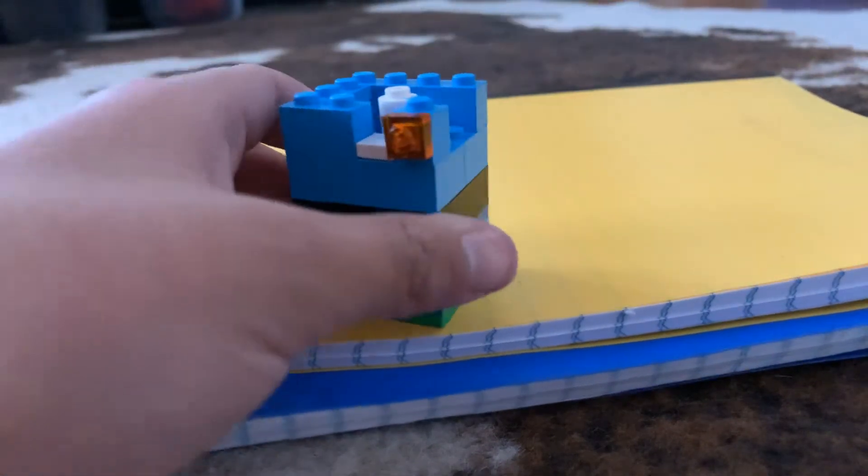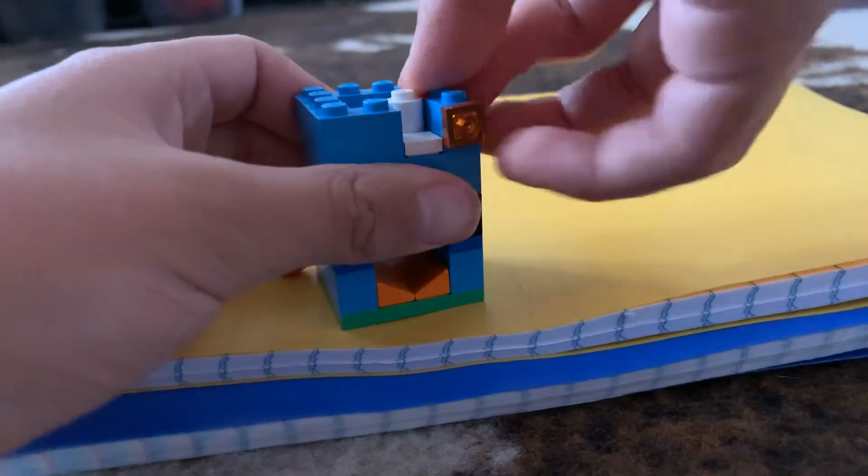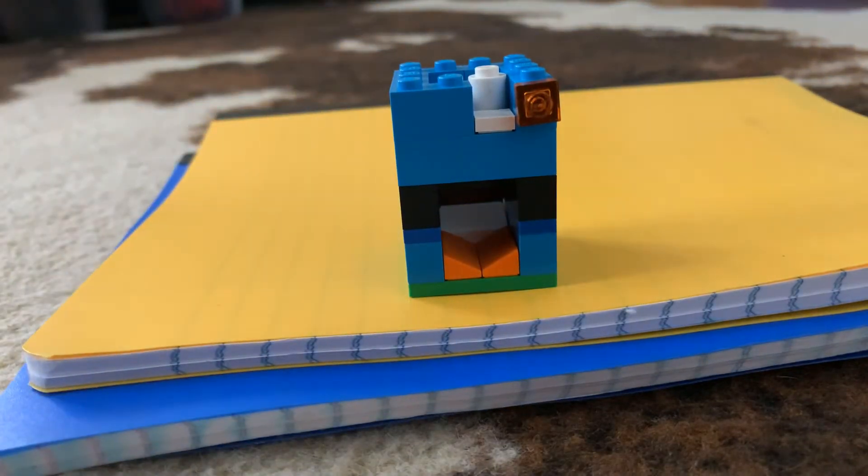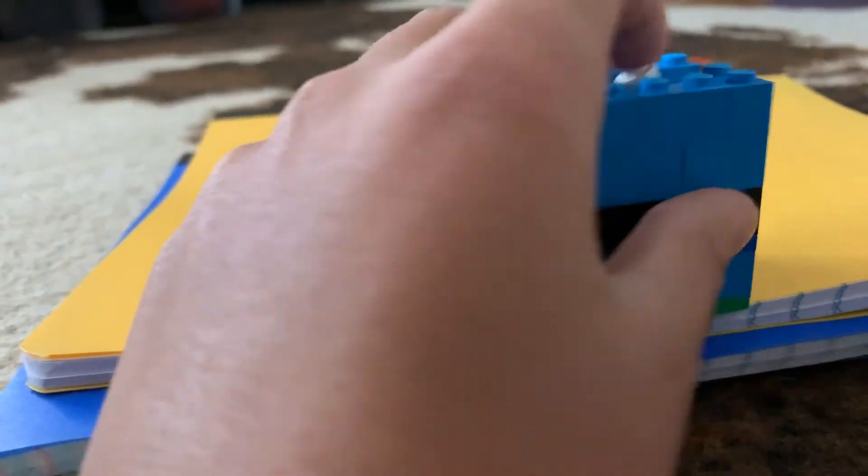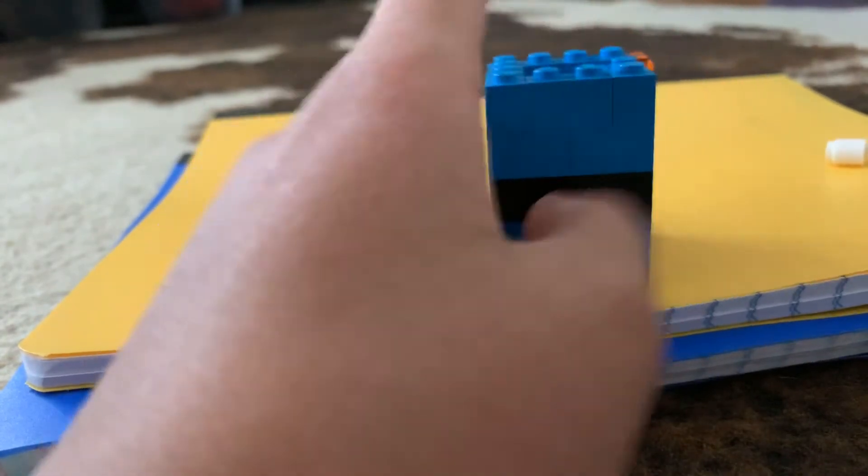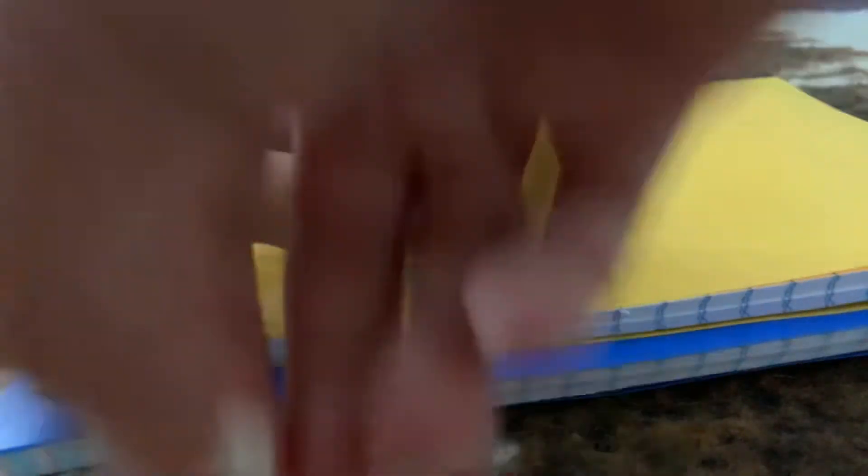You have this now. So when you put the money in the slot, you're going to push this off. This is going to fall off and fall down. So that's how it works.